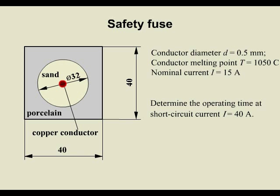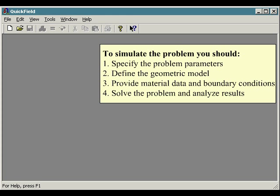Safety fuse conductor: diameter 0.5mm, melting point 1050°C, nominal current 15 amps. Determine the operating time at short circuit current 40 amps. To simulate the problem you should specify the problem parameters.